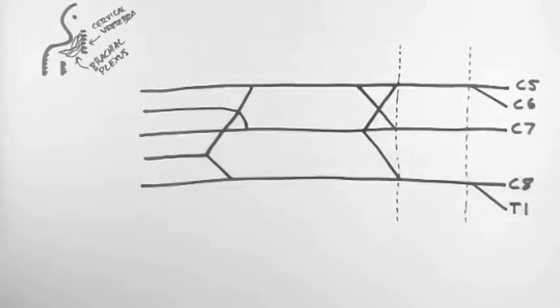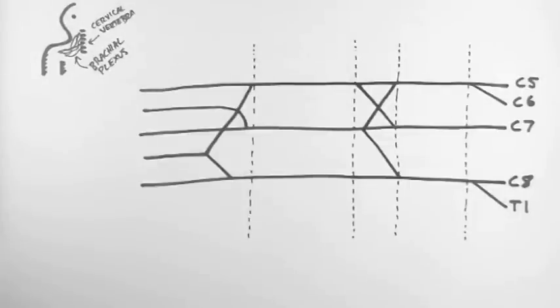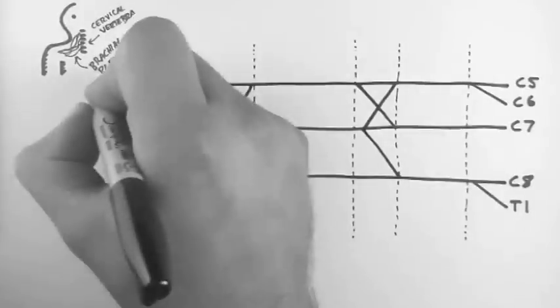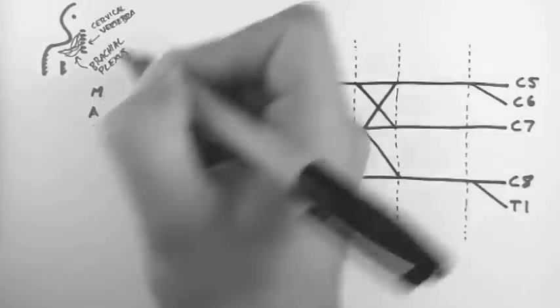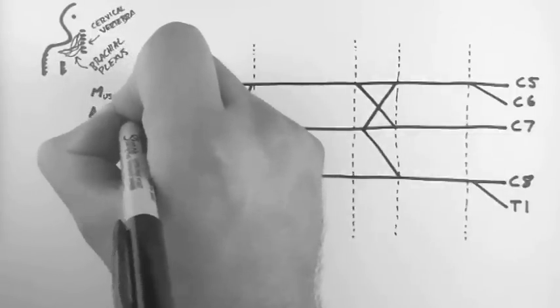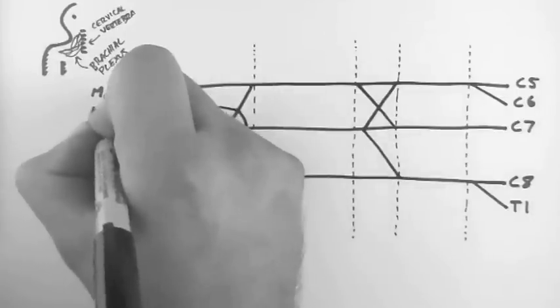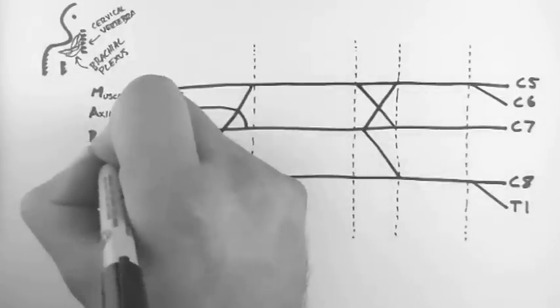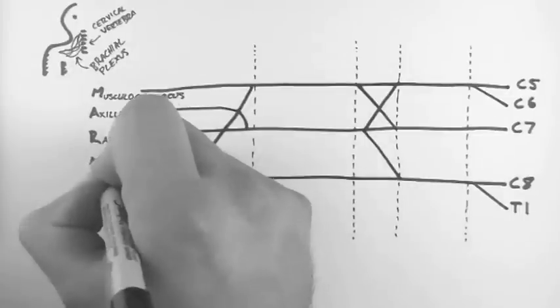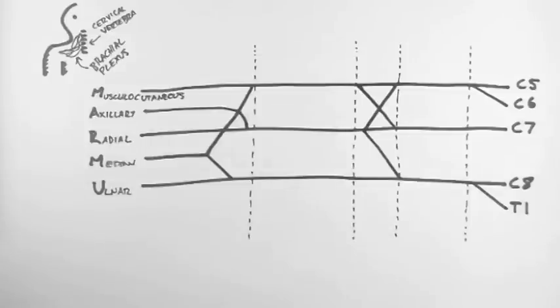Now we split the brachial plexus up into sections and we'll label those sections in a moment but first of all let's have a look at the branches which arise. Downward they spell MAMU and this stands for Musculocutaneous which is this top branch here, Axillary, Radial, Median and Ulnar and these are the names of the nerves which arise from the brachial plexus.